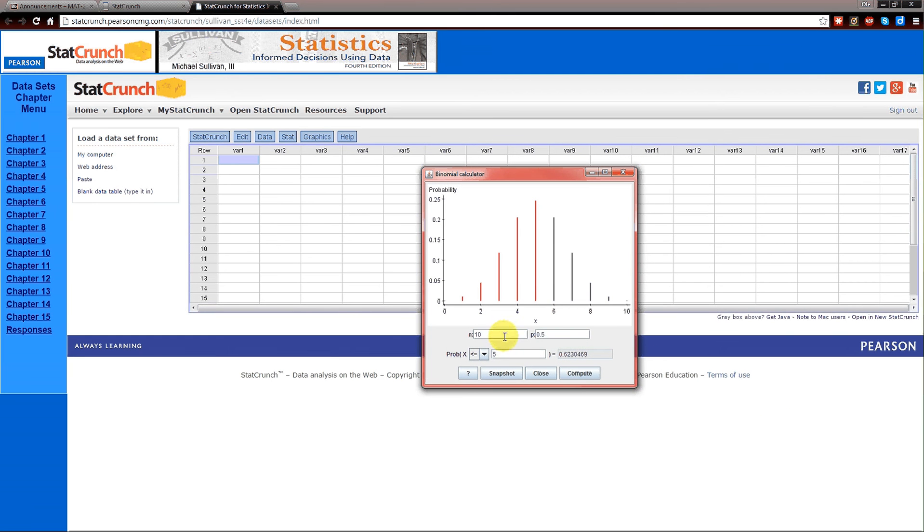There's four spaces that need to be filled in. The first is n, the number of trials. The second is p, the success probability for each trial. The fourth is little x, the probability we want to learn about. And the third is the direction.